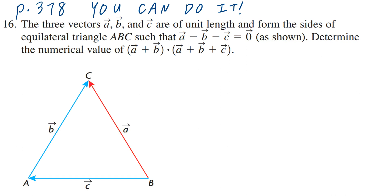Hi everyone, let's take a look at number 16 on page 378. The three vectors a, b, and c are of unit length and form the sides of equilateral triangle a, b, c such that vector a minus vector b minus vector c equals a zero vector. Determine the numerical value of (vector a plus vector b) dotted into (vector a plus vector b plus vector c).